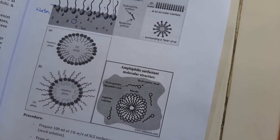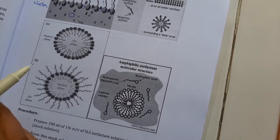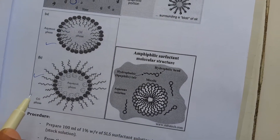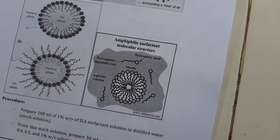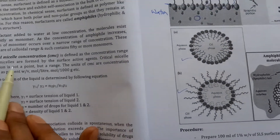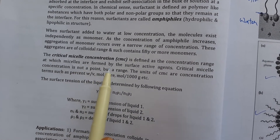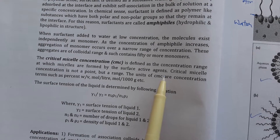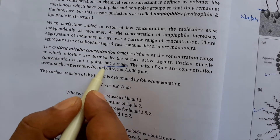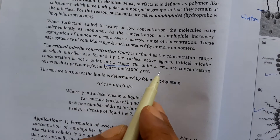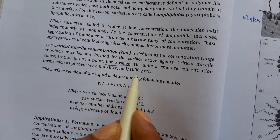In this practical, we have to determine the minimum concentration of surfactant at which micelle formation starts — that is known as critical micelle concentration. CMC is defined as the concentration range at which micelles are formed by the surface active agent. Actually this is not a particular point; this is a range. The unit of CMC uses concentration terms such as w/v, mole per liter, or mole per thousand.